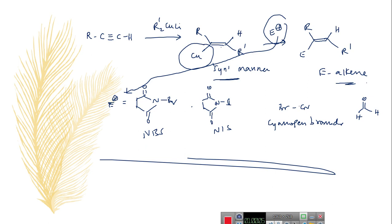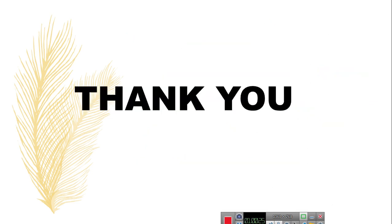Gilman's reagent majorly undergoes substitution reactions and conjugate addition reactions. In conjugate addition reactions with Gilman's reagent, we have to consider the obvious stereochemistry with respect to substituents present in the alpha, beta unsaturated system. Thank you.